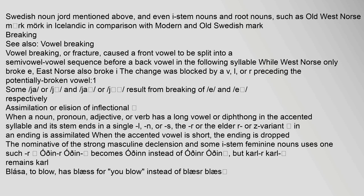When a noun, pronoun, adjective, or verb has a long vowel or diphthong in the accented syllable and its stem ends in a single L, N, or S, the R in an ending is assimilated. When the accented vowel is short, the ending is dropped. For example, the nominative of the strong masculine declension uses such an R: oin-r becomes oin instead of oin-r, but Karl-r remains Karl.